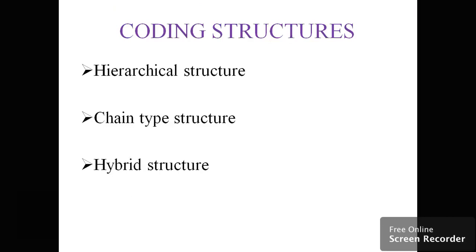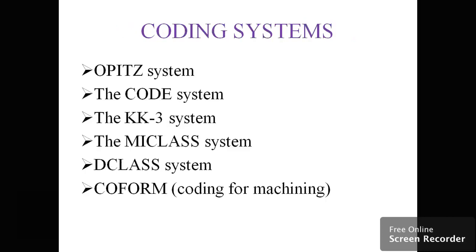Coding structures include monocode, chain type structure, hybrid structure, and polycode. These coding structures are used to organize group technology components.